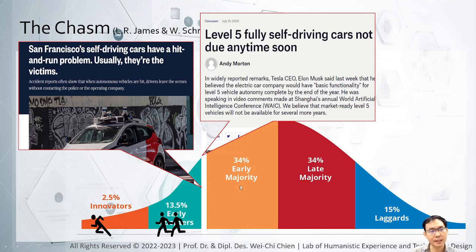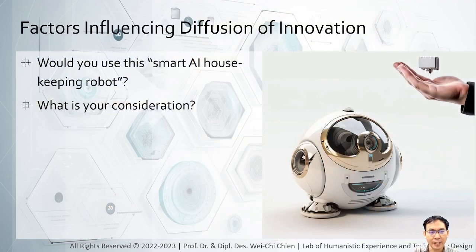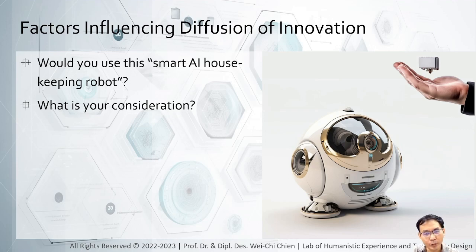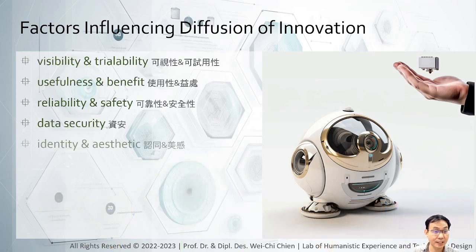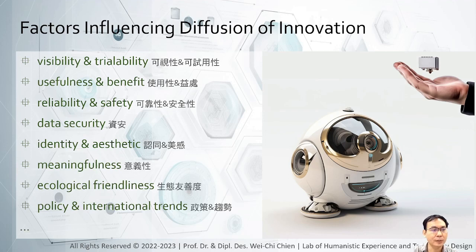So what else can influence our attitude of accepting an innovation? Imagine you are my potential customers and I am presenting you this marvelous smart AI housekeeping robot. Will you buy it? Tell me, what are in your considerations? Your responses can be categorized in the following areas. First, the visibility and the tryability — if I do not present this innovation or demonstrate the device, you don't know what it is or how it works. Second, usefulness and benefit — why do I need the housekeeping robot? Will it make my life easier?